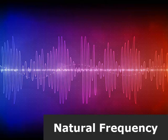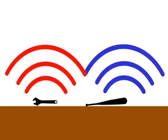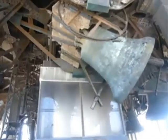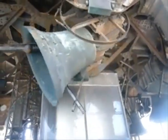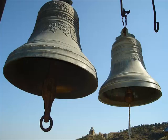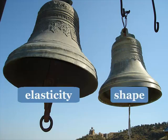When any object composed of an elastic material is disturbed, it vibrates at its own distinct set of frequencies. Drop a wrench and a baseball bat on the floor, and you hear distinctly different sounds — objects vibrate differently when they strike the floor. The natural frequency of an object is the frequency the object vibrates at when it is disturbed. Natural frequency depends on the elasticity and the shape of the object.